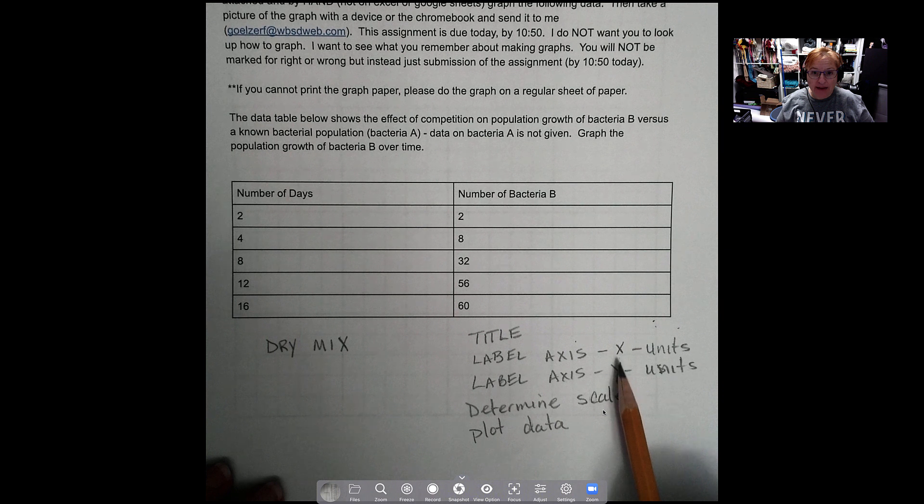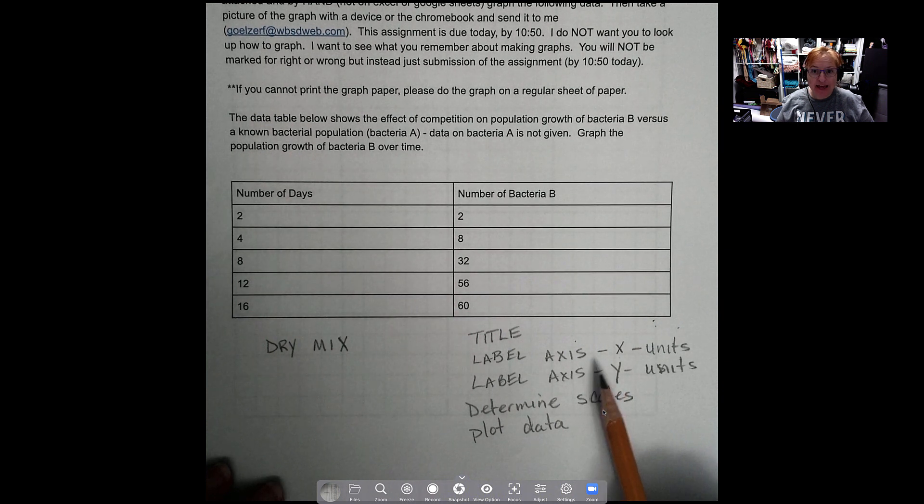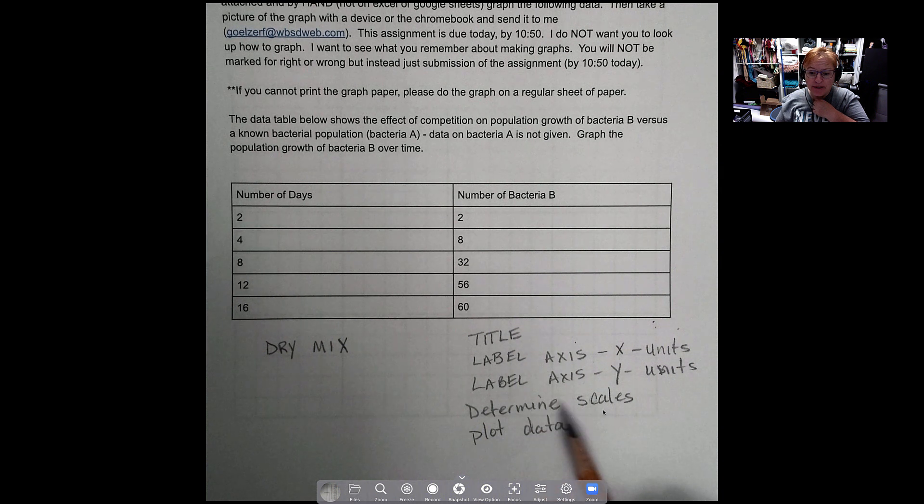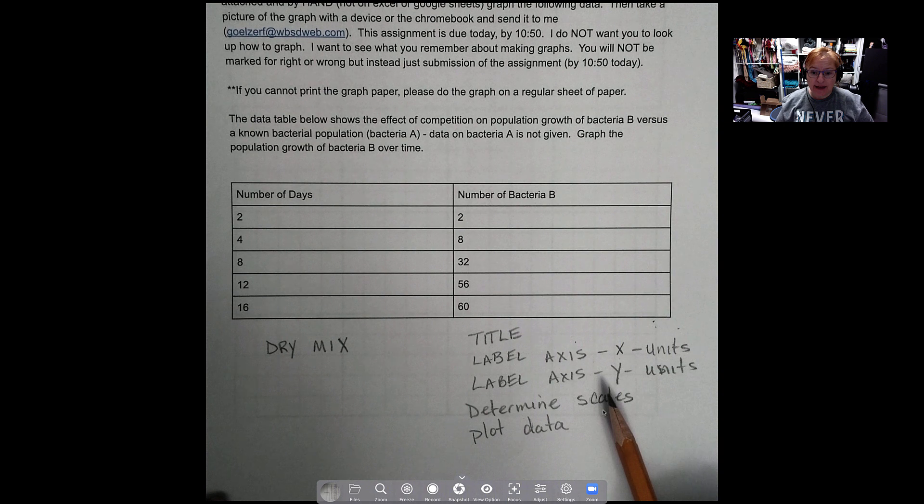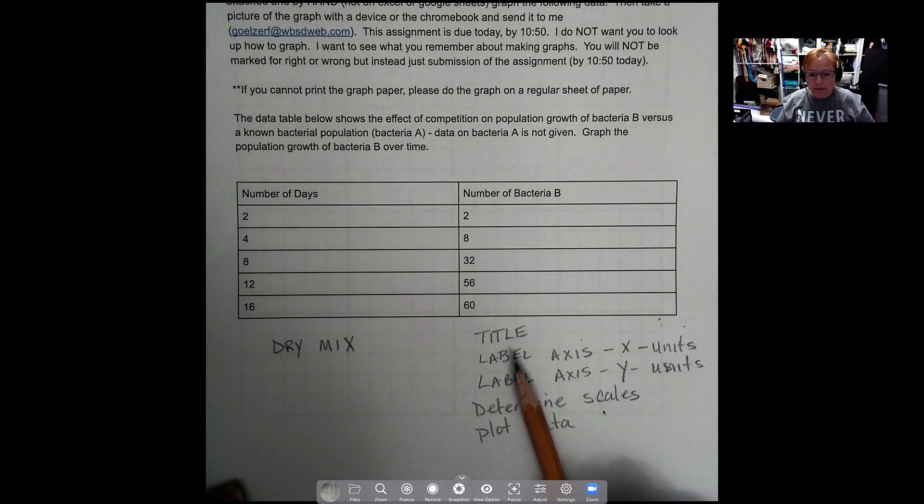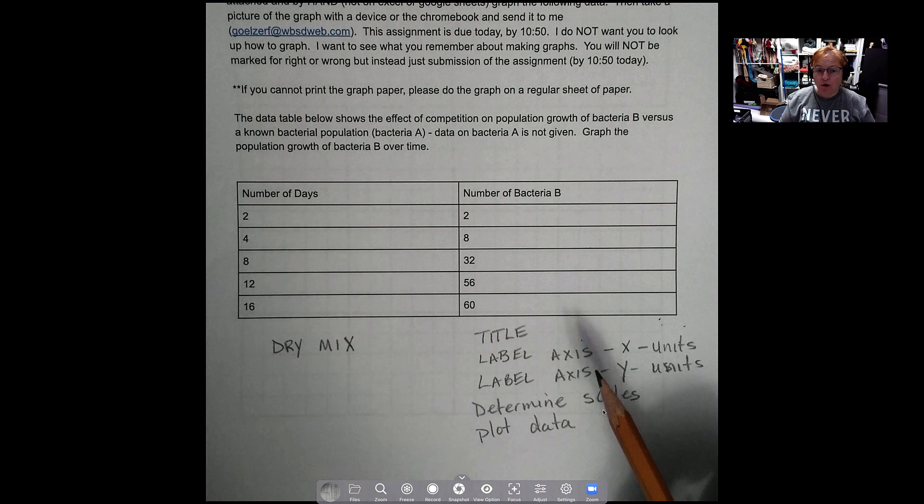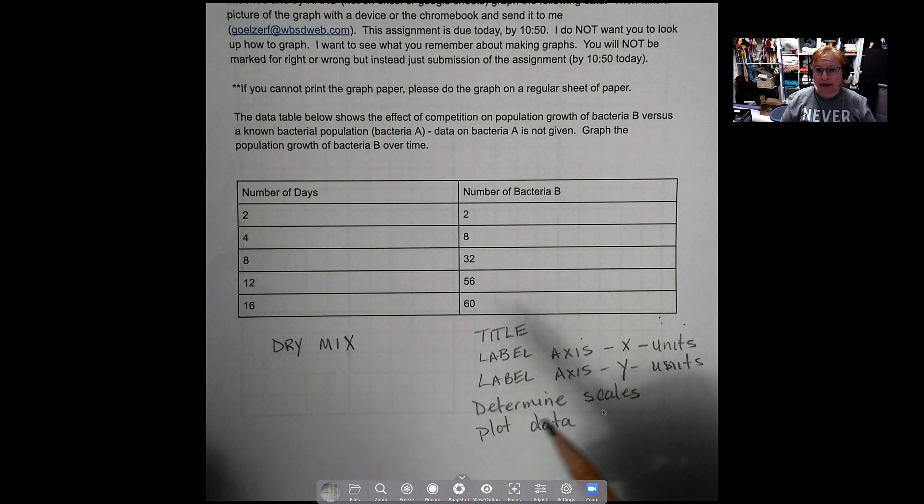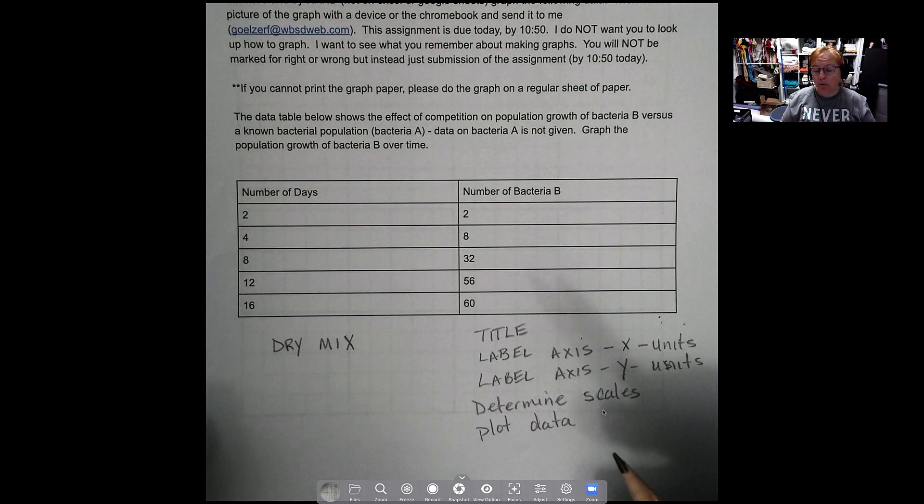Need to have a title, need to label both the x and y axes, as well as not just label them for what they stand for but making sure to put units in, determine the scales that you're going to use for both the x and the y axes, and then go ahead and plot the data. So in order to label the x and the y axes, what you have to do is you have to know which variable goes on which axes, right?